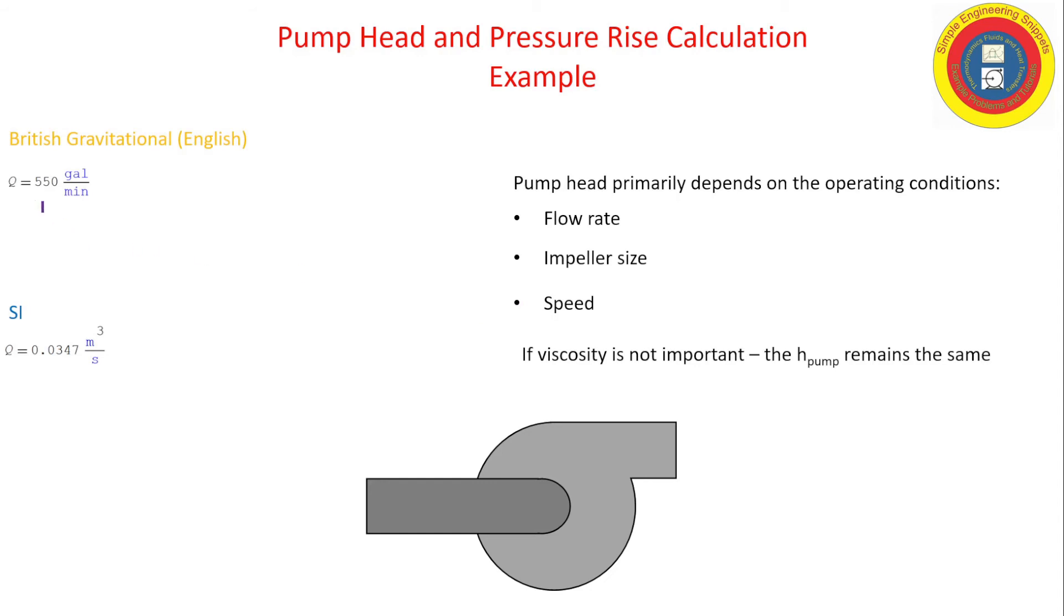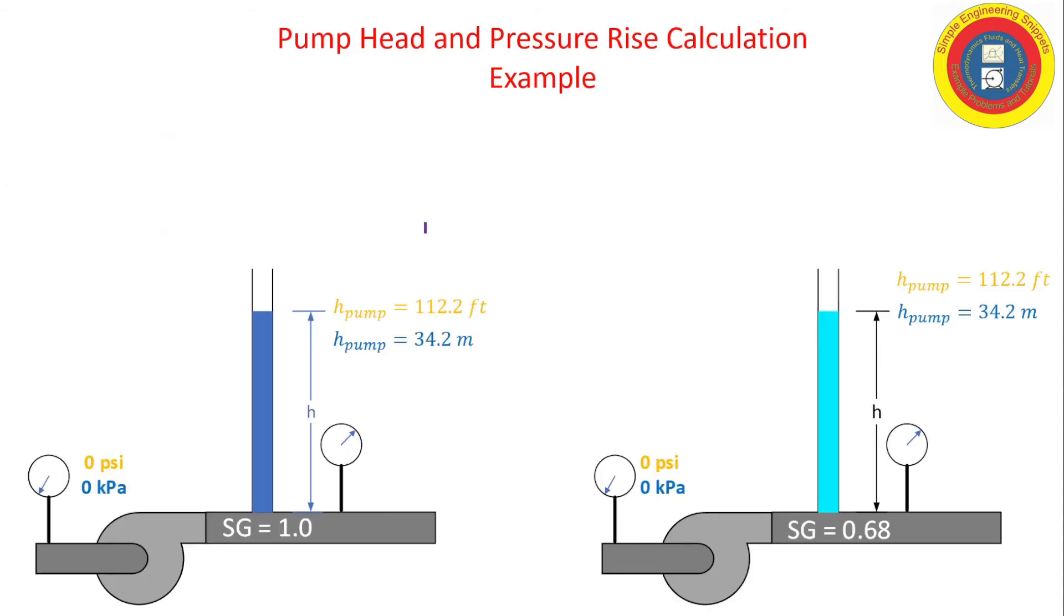Okay, so when that is true, then the pump head remains the same. So we have the same pump operating at the same speed, we're going to be analyzing for the same flow, and so the pump heads remain the same. Now this is sometimes not intuitive, so let's take a look at it graphically. On the left side, we have specific gravity equal to one, we have the pump heads, and we don't know what the pressure is—we're going to calculate that. And for specific gravity equal to 0.68, the gasoline, again the pump head is going to be the same.